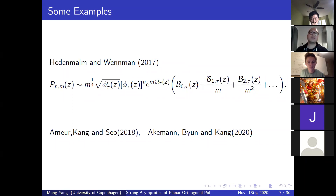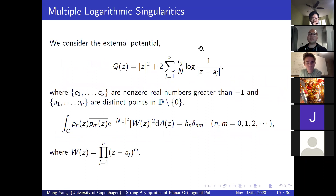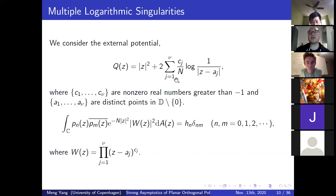In 2018, Ameur, Kang, and Seo studied the normal random matrix model with insertion of one point charge. In 2020, Ackermann, Byun, and Kang studied the Wishart-type random matrix model, where the orthogonal polynomials are related to Laguerre polynomials. For our work, we study the external potential Q given by Gaussian weight perturbed by a finite number of point charges — logarithmic singularities at fixed points A_j. The C_j's are nonzero real numbers greater than negative one, and all A_j's are distinct points inside the unit disk but not at the origin.